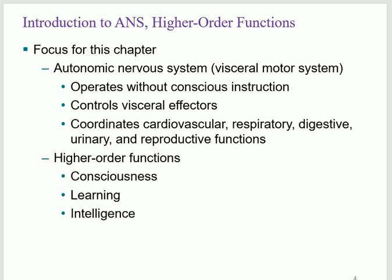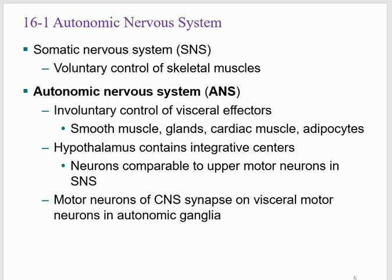The autonomic nervous system is the visceral system. We already covered the somatic nervous system — somatic sensory and somatic motor. Somatic means anything that's voluntary. Now the visceral autonomic nervous system covers sympathetic and parasympathetic, plus higher functions: consciousness, learning, and intelligence. The somatic nervous system is the voluntary one — sensation from skin and muscles and motor commands to the voluntary muscles.